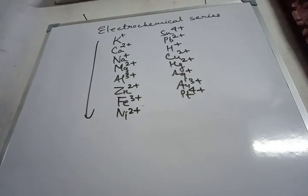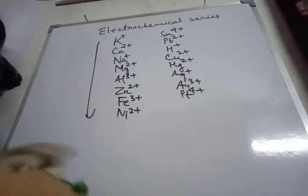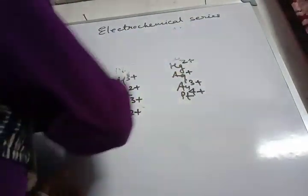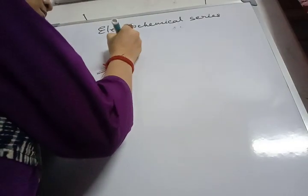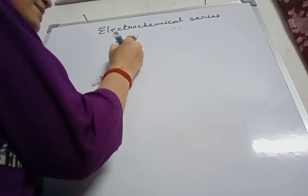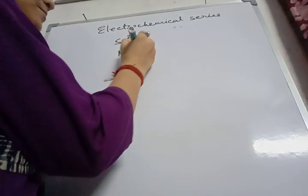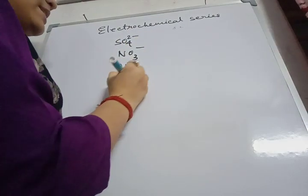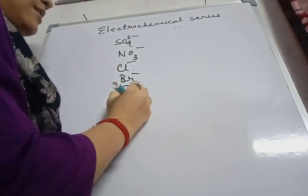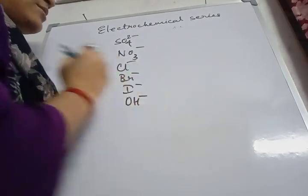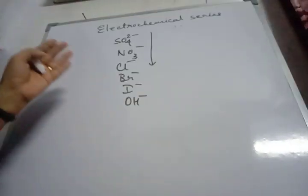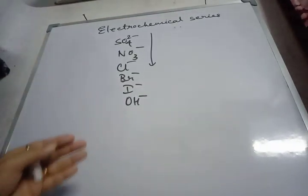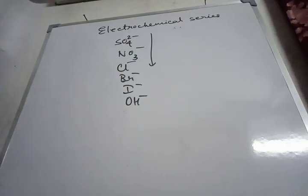Similarly, we have an electrochemical series of anions as well. First we have sulfate, then nitrate, fluoride, bromide, iodide, and hydroxide. In case of anions also, as we move down the series, the tendency of the anions to get deposited at the anode increases.